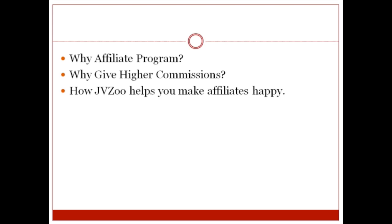JVZoo helps make your affiliates happy because it's all about instant payments — at the point of sale your affiliates get paid. And if there is a refund, it's an instant refund. When things are refunded, it takes it out of the affiliate account, out of your business partner's account, and from your account. So it makes life easy for you and your affiliates.